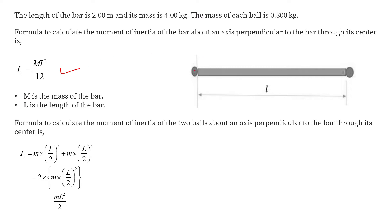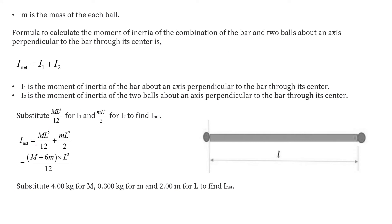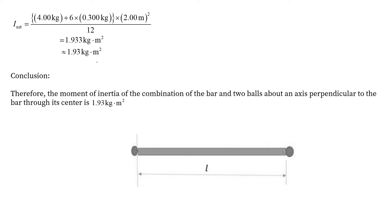Now, the moment of inertia of the point masses from the center: for one ball, the mass is m and the distance is l divided by 2, so the moment of inertia is m times (l/2) squared. Multiplying by 2 for both balls gives i2 equal to ml square divided by 2. The total moment of inertia i1 plus i2, substituting the values of M and m, comes out to be 1.93 kg meter square.